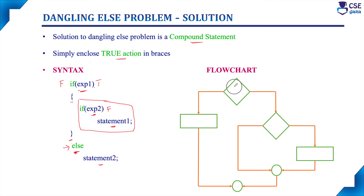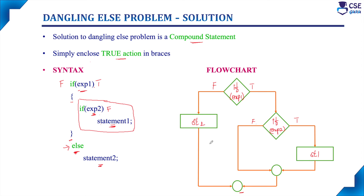Now the corrected flowchart: if expression 1 is true, it goes inside the true-path compound statement and evaluates if expression 2. If expression 2 is true, statement 1 executes. If expression 2 is false, control comes out of the inner if and then out of the outer if as well — nothing else executes. When the outer if expression 1 is false, it executes statement 2. This is the actual nested if concept. Good practice is to always specify statements within curly braces when there is more than one statement to execute.